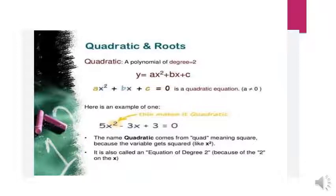Example: 5x² - 3x + 3 = 0. The name 'quadratic' comes from 'quad' meaning square, because x has a power of 2. It is also called an equation of degree 2.